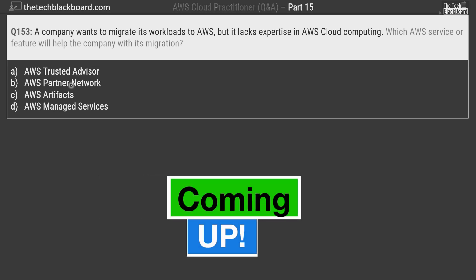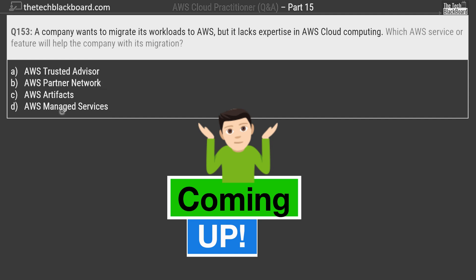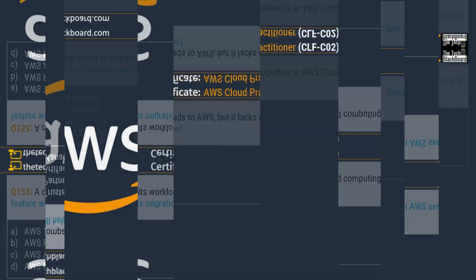Question number 153, a really interesting question. I will tell you why I had a confusion between option B, which is AWS Partner Network, and option D, AWS Managed Services.